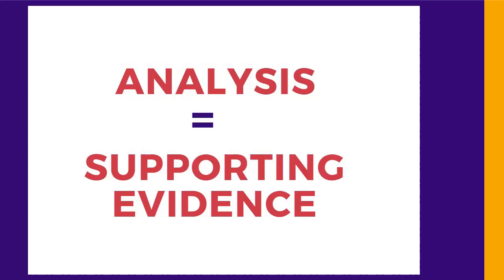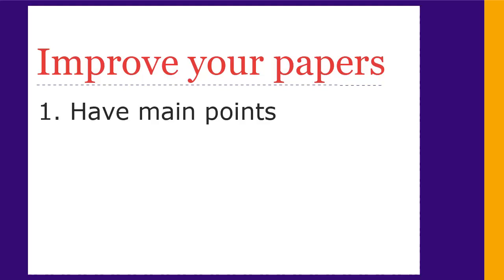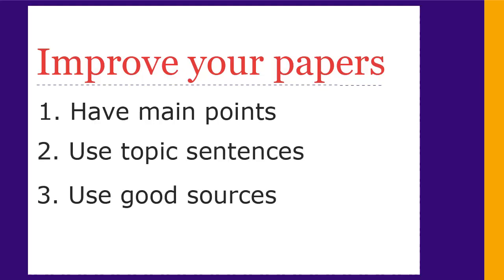In summary, to effectively analyze arguments, we need to understand how well the supporting evidence backs them up. That's how to identify and analyze arguments in your reading. You can also use these tips in your own writing to improve your papers. Make sure you have a main point for each section of your paper and state it clearly in a topic sentence. Then make sure you support your argument effectively with good evidence from sources.